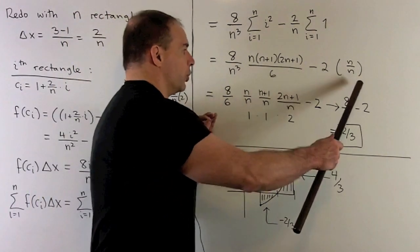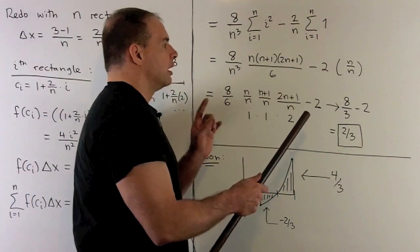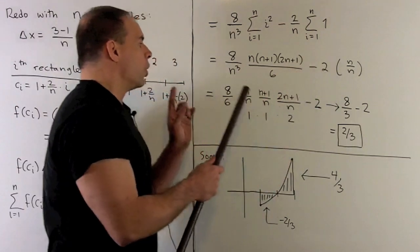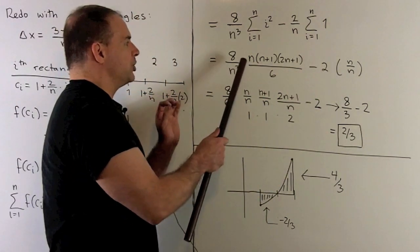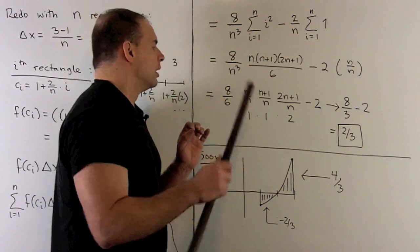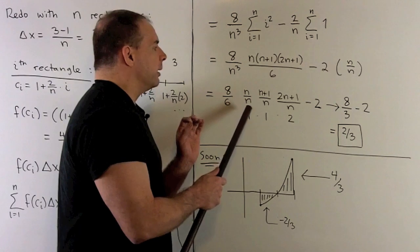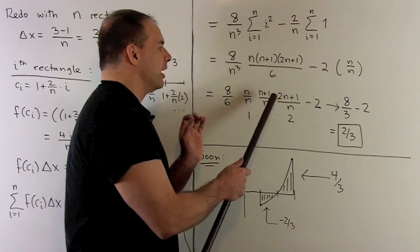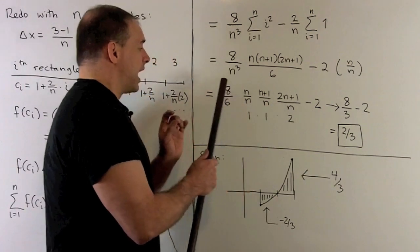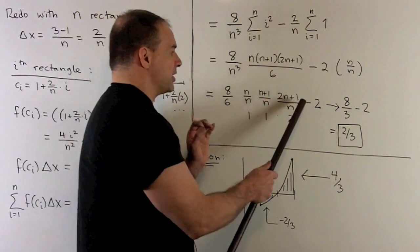So, now, we can start reducing this. Now, over here, we just have a minus 2 because we have an n over n. Over here, I'm going to lump each term in the numerator with one n from the denominator. So, n over n goes away. We have n plus 1 over n. And then, we have 2n plus 1 over n times 8 over 6 and then minus a 2.